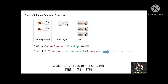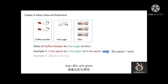The unit of measurement used is number of teaspoons. You can also use other units such as grams to represent the ratio. In this case, the ratio is 10 grams to 5 grams to 15 grams.